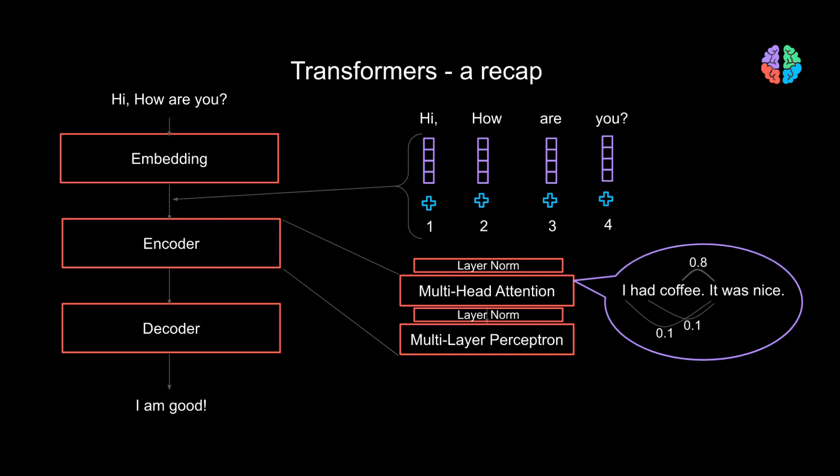Let's not forget the normalization layers that are always used in neural networks — the transformer uses layer normalization. Also, several layers of encoders can be stacked together to boost the predictive power of the transformer. The decoder, in short, does the reverse of the encoder with a mask layer within it. We won't go into the details of the decoder as it's not needed to understand this paper.